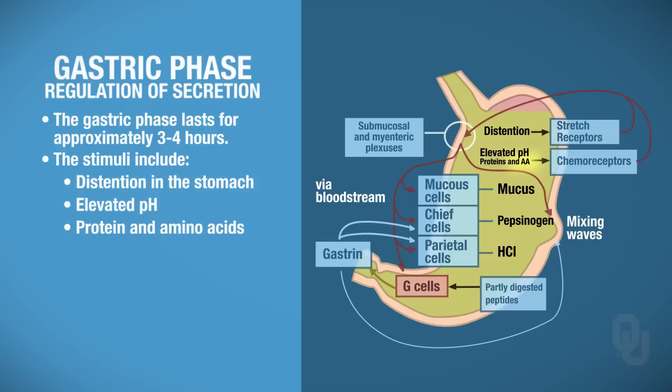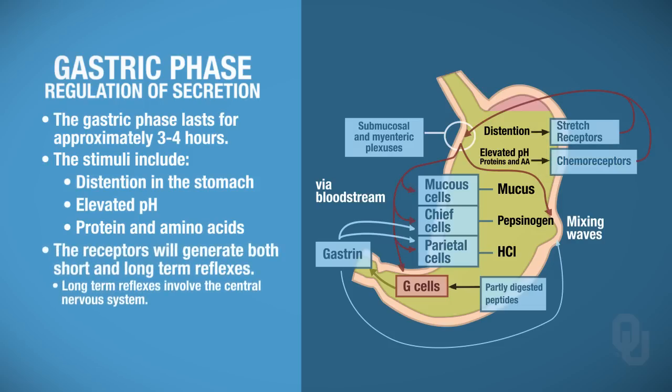The receptors are the stretch receptors that detect distention. Chemoreceptors are going to detect the elevated pH, the proteins, and the amino acids in the lumen of the stomach. That's going to generate short and long-term reflexes. If it's a long one, it involves the central nervous system; if it's short, it directly stimulates the enteric nervous system.